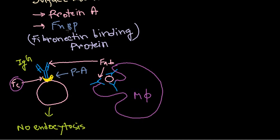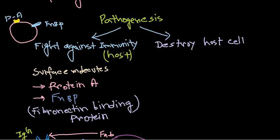The second surface mechanism is Fibronectin Binding Protein, or FNBP. FNBP binds with the fibronectin layer, stabilizing the bacterium at a particular place and not providing any signal to immune system cells. As a result, the immune system cannot recognize the pathogen as foreign — it is seen as its own cells. So the immune system is puzzled and doesn't get the signal that this is a pathogen. This is how FNBP helps escape host immunity.